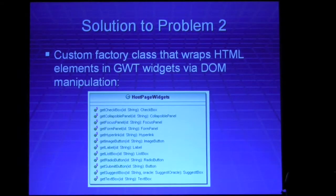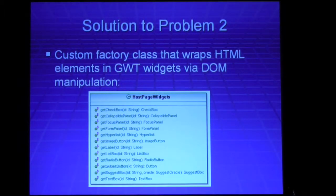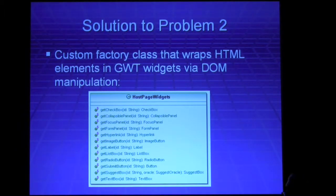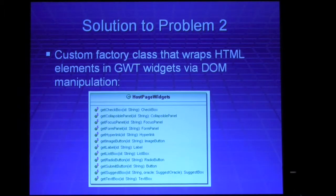The second thing is integrating with existing HTML elements. While GWT does let you do that now in GWT 1.5, we didn't have that in 1.4. So we actually wrote a factory class where you say, for instance, 'get checkbox,' pass in an HTML ID, and it will essentially wrap that checkbox in a GWT component, which you can do whatever you want with in a GWT environment.